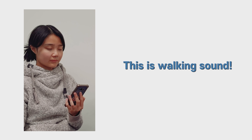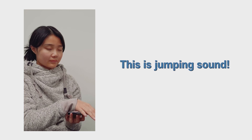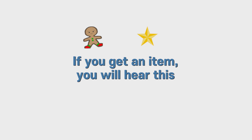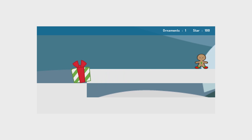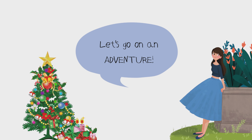This is the walking sound. Cover your phone's screen to jump. This is the jumping sound. If you get an item, you will hear this. If you bump into a wall, you will hear this. And lastly, this means you successfully pass an obstacle. Now we are ready to go. Let's go on an adventure.